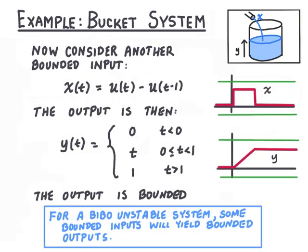It is important to point out that while the bucket system is BIBO unstable, it does not take every bounded input and produce an unbounded output. Some bounded inputs produce bounded outputs. For example, the input x(t) = u(t) − u(t−1), shown in the diagram, corresponds to turning the water on for a period of time and then turning it off. The output ramps up and then is held constant — it is bounded. The lesson is clear: not every bounded input produces an unbounded output when the system is BIBO unstable, but there exists a bounded input which produces an unbounded output.